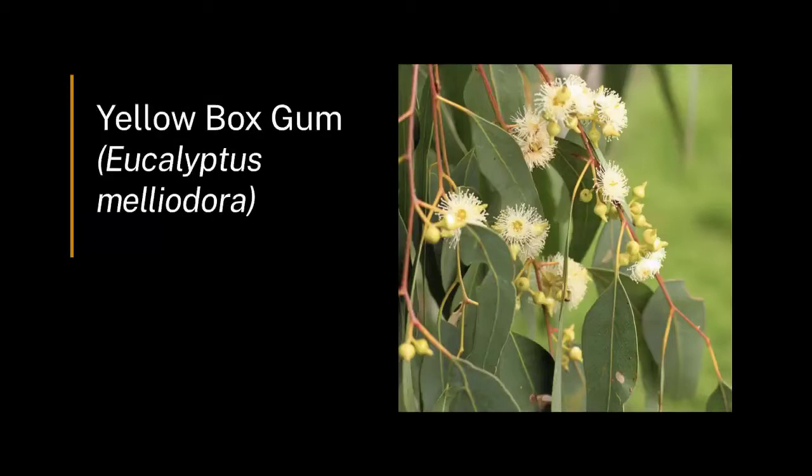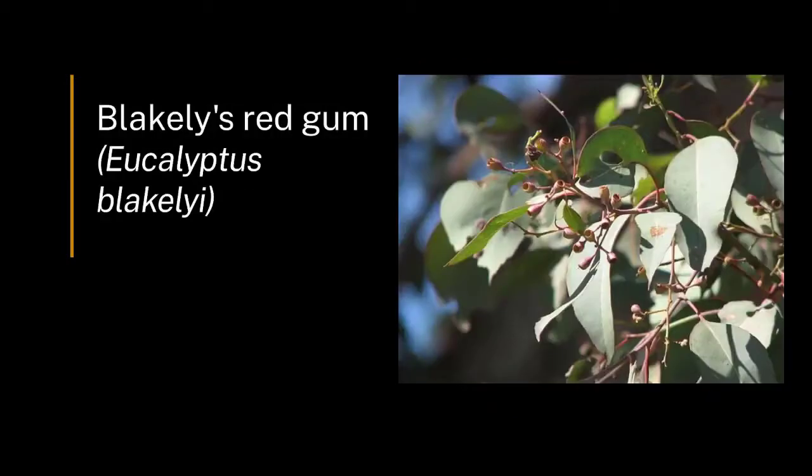Mulligan's Flat is a box gum grassy woodland, which means it's characterised by two types of trees — Yellow Box, and there's a few of them behind me over there, and Blakely's Red Gums. Those two trees together, combined with these grasses and shrubs, make up this ecosystem which is critically endangered, which is why we're protecting it here, learning about what makes it tick and how best to restore them here and in other parts of the country.